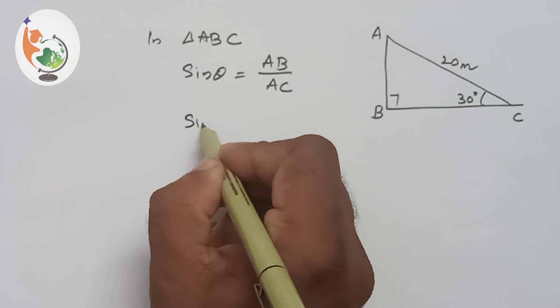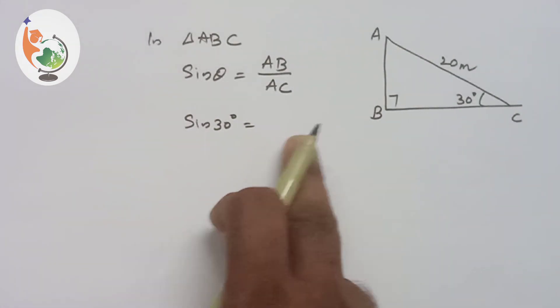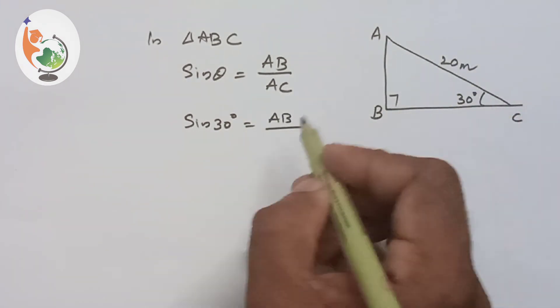So sin 30 degrees is equal to AB, that is the opposite side that we have to find out, over AC which is equal to 20.